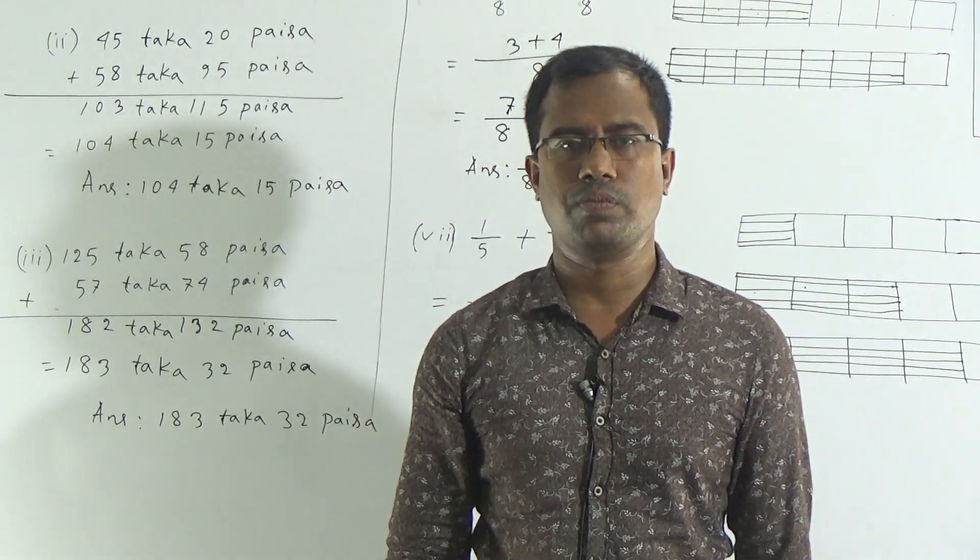Now we will solve the last addition: 1 by 5 plus 3 by 5. Here you are watching a braid; we have divided it into 5 equal parts — 1, 2, 3, 4, and 5. From 5 parts we will take only 1 part. Another braid exists here; we have divided it also into 5 equal parts. From 5 parts we will take 3 parts: 1, 2, and 3. If we add these two braids it will be 1, 2, 3, and 4.